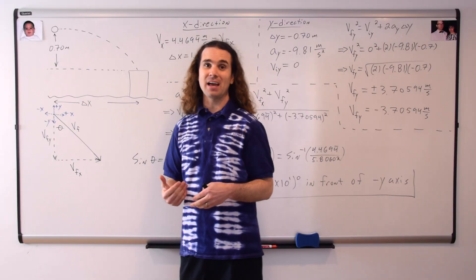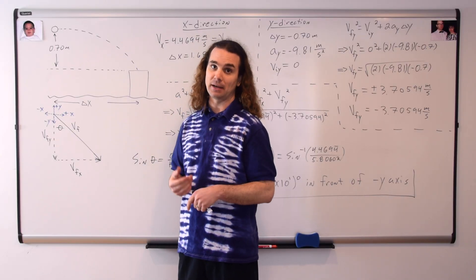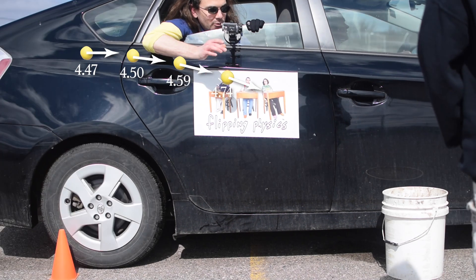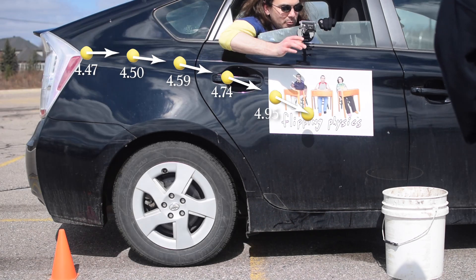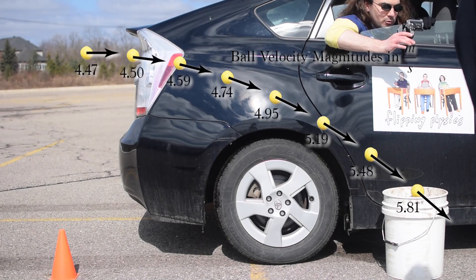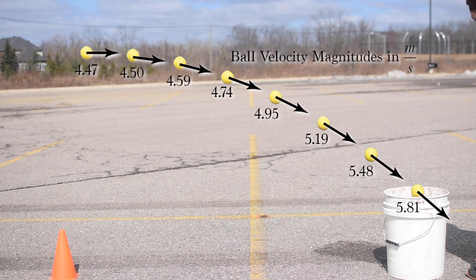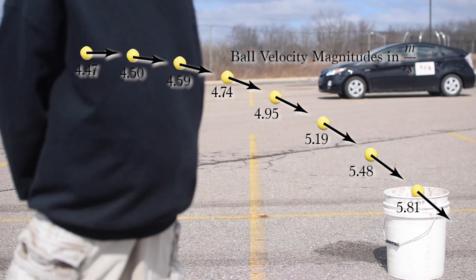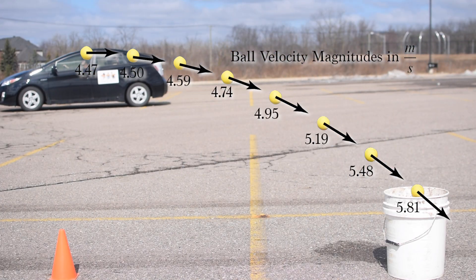Notice that the initial velocity of the ball is about 4.47 meters per second horizontally to the right. And as the ball falls, the magnitude of its velocity increases and the direction of the velocity points farther and farther down, until right before it hits the bucket and has a velocity of approximately 5.81 meters per second at an angle of approximately 50.3 degrees in front of the negative y-axis. The velocity vector arrows increase in length as the ball falls because the magnitude of the ball's velocity keeps increasing.